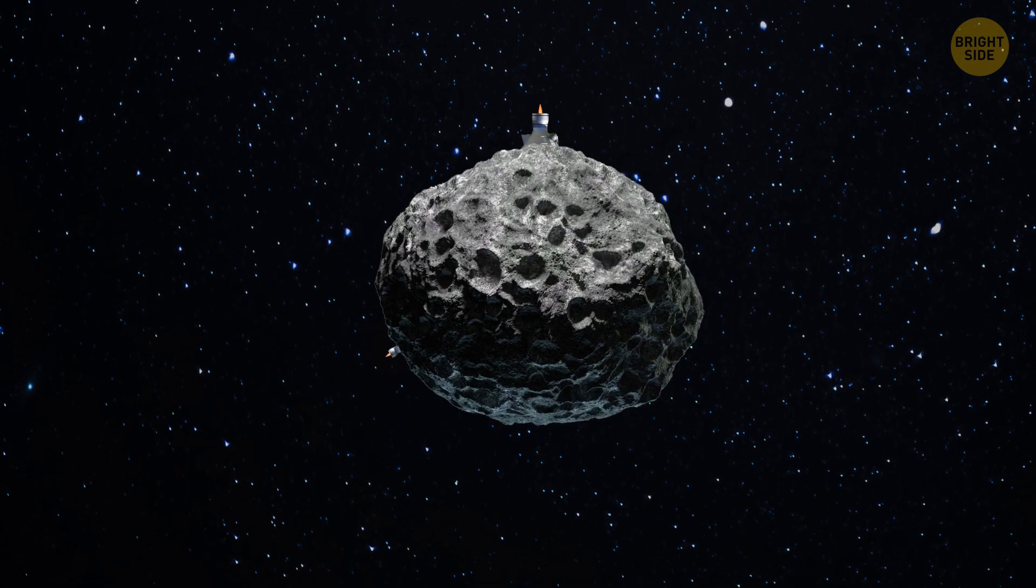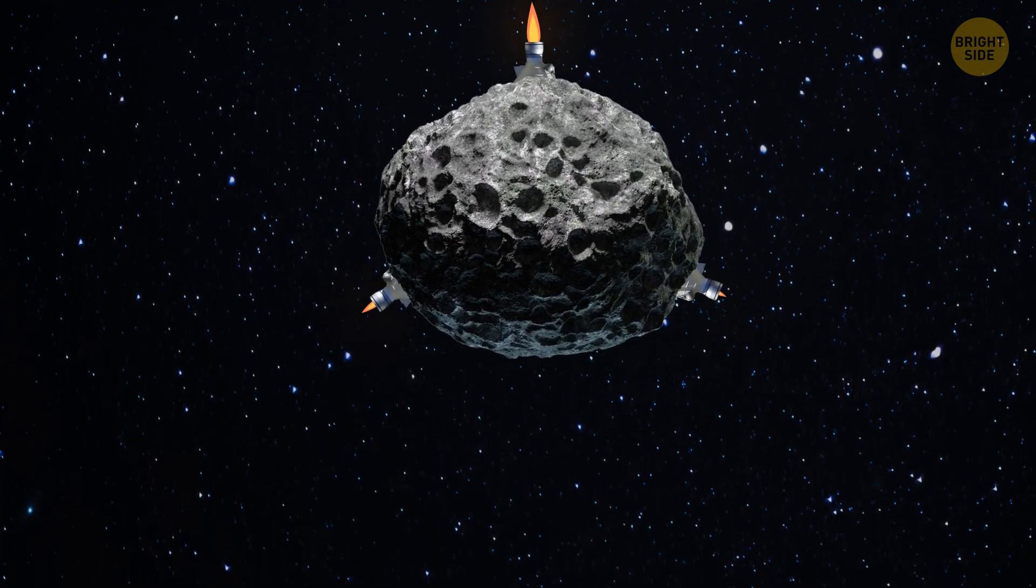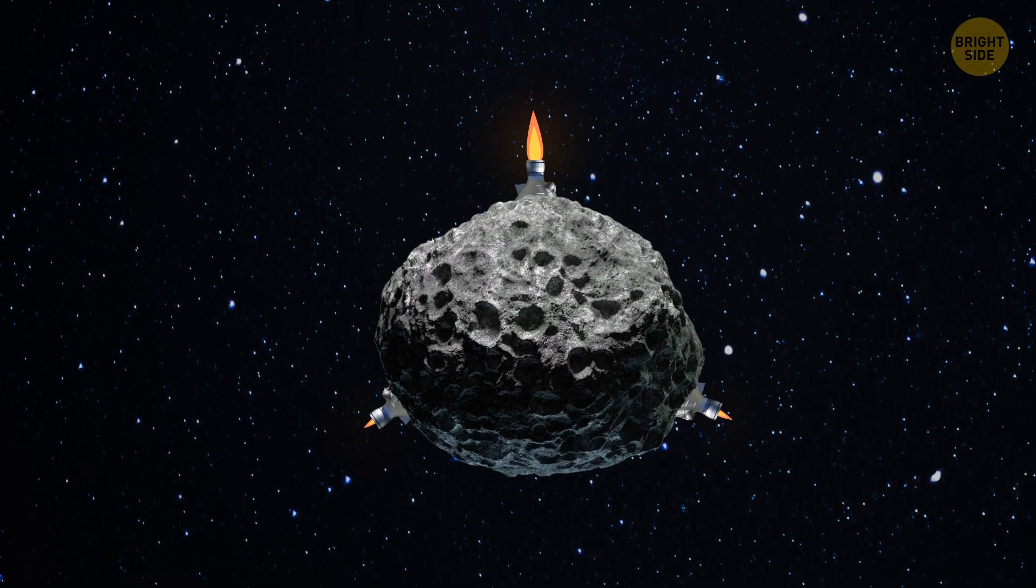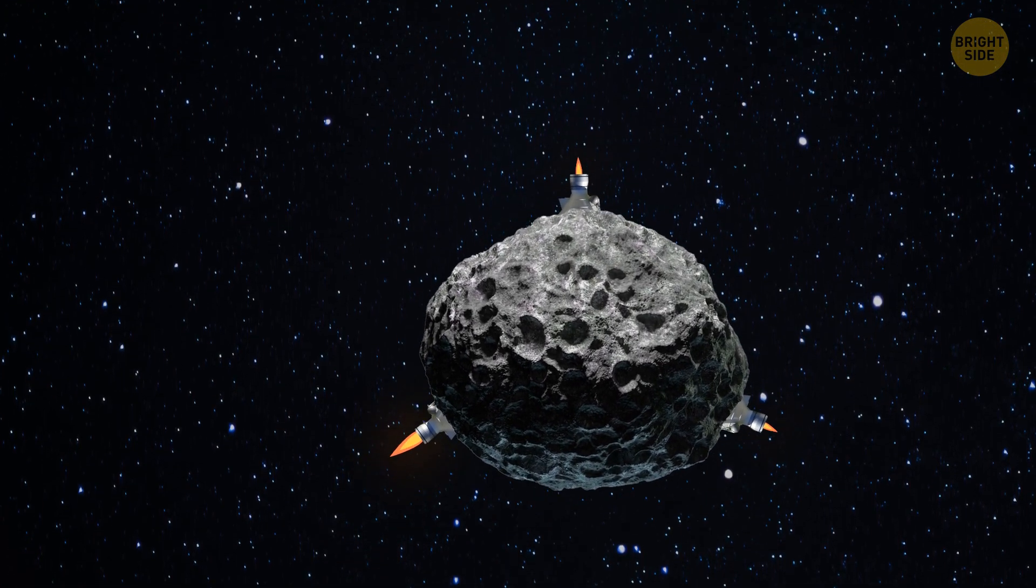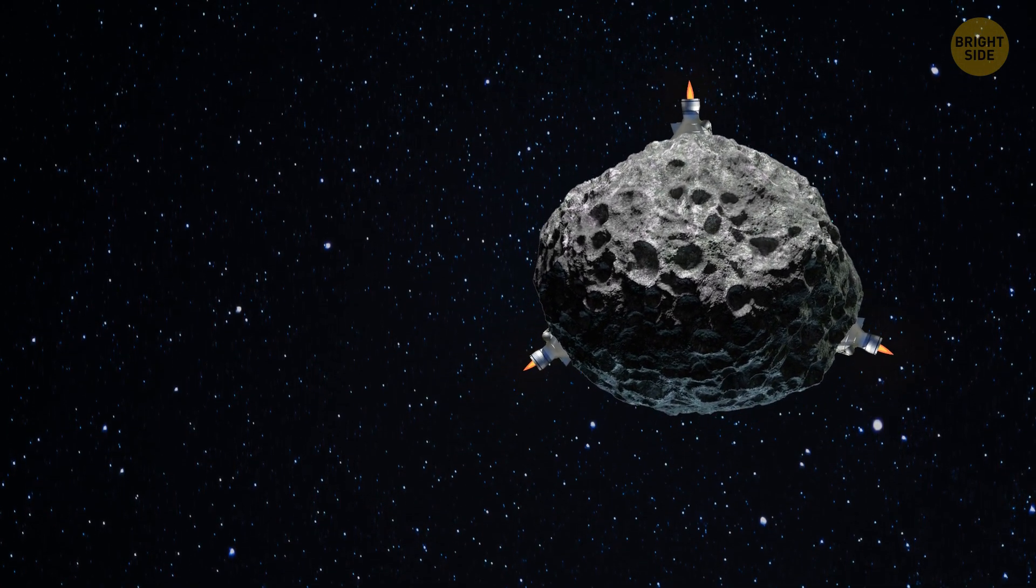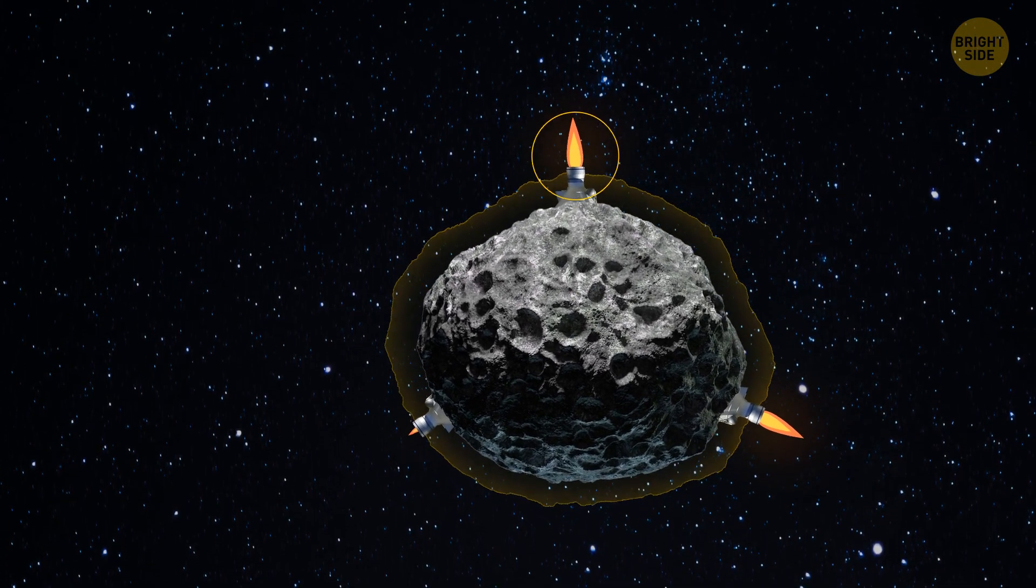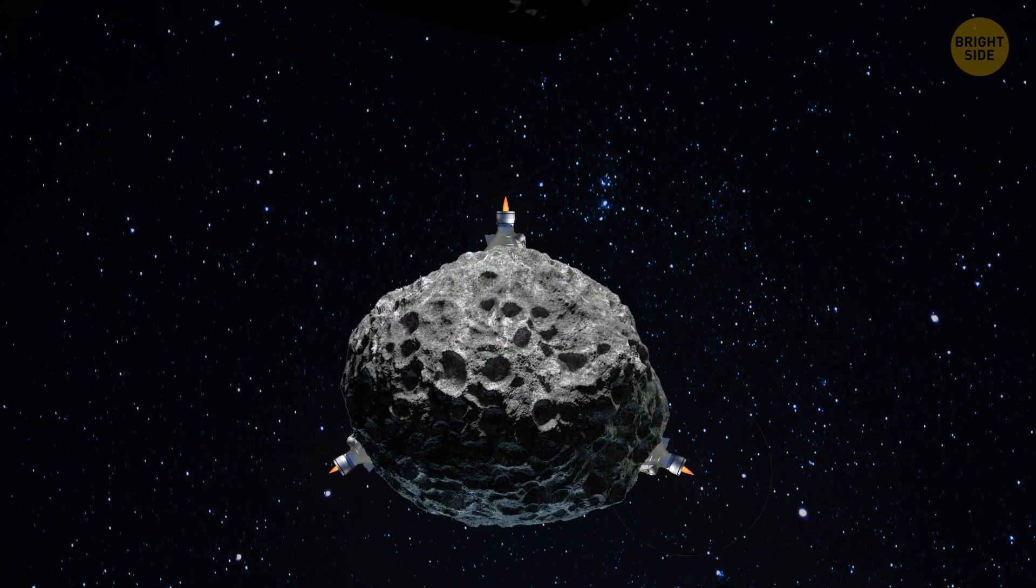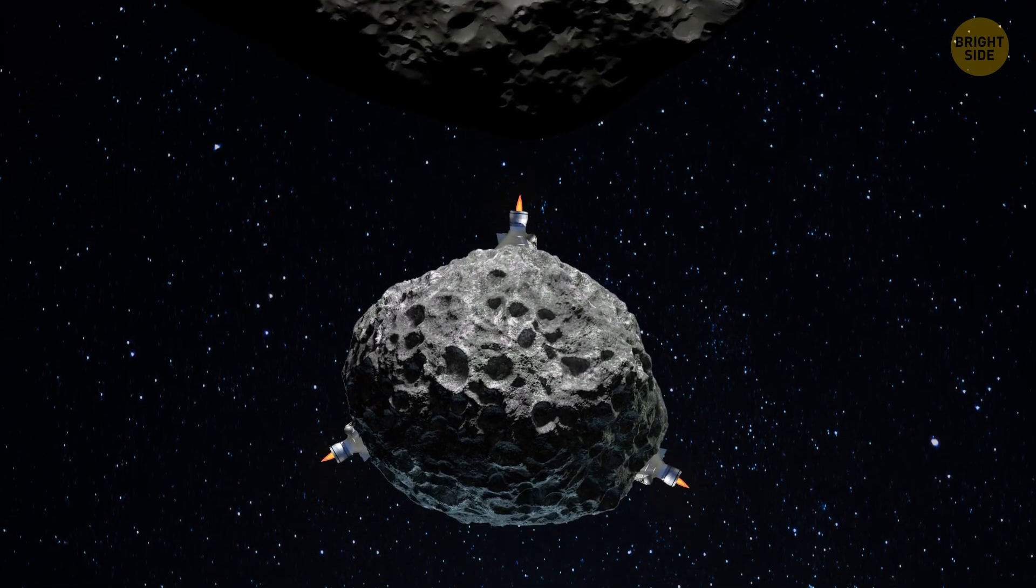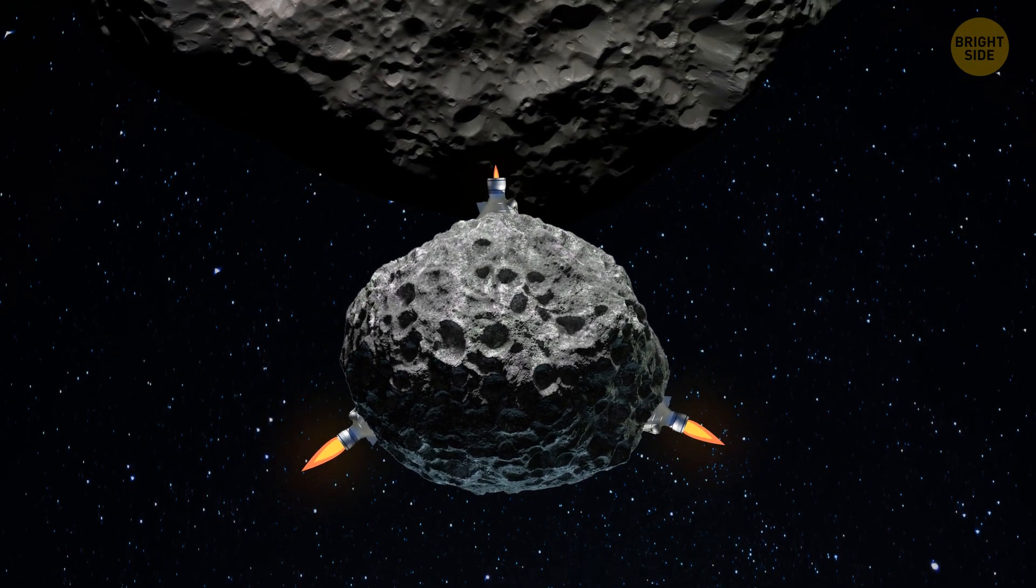Of course, we could attach rocket engines to the asteroid. This way, we would be able to not only change its trajectory, but also control it. But that would depend on the size of the asteroid and the number of engines. And then, we could use this massive rock to ram it into other, larger asteroids.